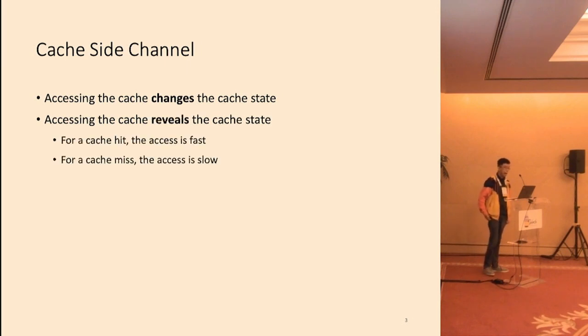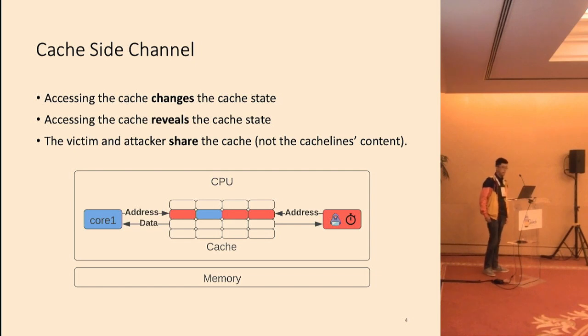Second, accessing the cache also reveals the cache state. For a cache hit, the access is fast, but for a cache miss, the access is slow. Finally, in an attack scenario, the victim and an attacker run on the same machine and thus share the cache.